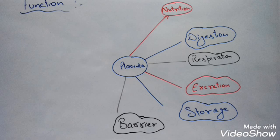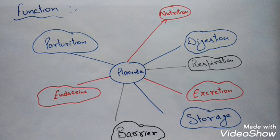The fourth function is excretion — the placenta works as an excretory organ of the fetus and releases nitrogenous waste material into the maternal blood. Fifth is storage — the placenta stores glycogen, fat, etc. for the fetus before the liver is formed. Sixth is barrier function — the placenta acts as a barrier and allows only useful things required for proper development of the fetus, however it cannot prevent the entry of certain components such as nicotine or viruses and bacteria. Seventh is endocrine function — the placenta acts as an endocrine gland and produces human chorionic gonadotropin hormone.